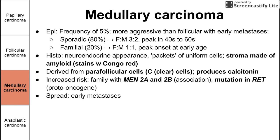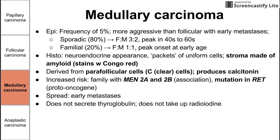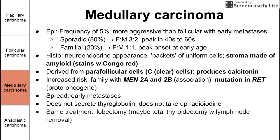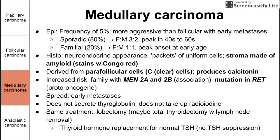Medullary carcinomas spread frequently and early, and are much more aggressive than papillary and follicular. They do not secrete thyroglobulin and do not take up radioiodine, which makes sense since they derive from parafollicular cells, not follicular cells. Treatment is surgical removal, and thyroid hormone replacement is given to maintain normal TSH — not for TSH suppression, since these don't come from hormone-producing follicular cells.